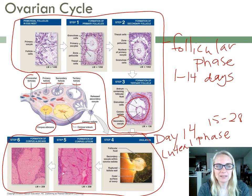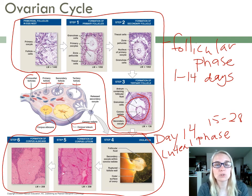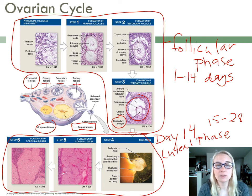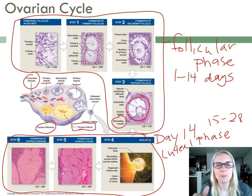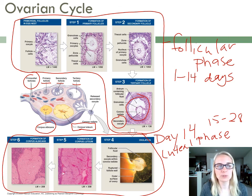So that is our ovarian cycle. Follicular phase — days 1 through 14 — dominated by the follicles and estrogen. Day 14 is ovulation. Days 15 through 28 is the luteal phase dominated by the corpus luteum, which secretes high levels of progesterone. When we go into the uterine cycle and the hormones, you'll see how that is interplaying. There's a really good graph at the back of chapter 28 that shows all of these events happening simultaneously — that's a really good tool. That is it for this video. I will see you next time.